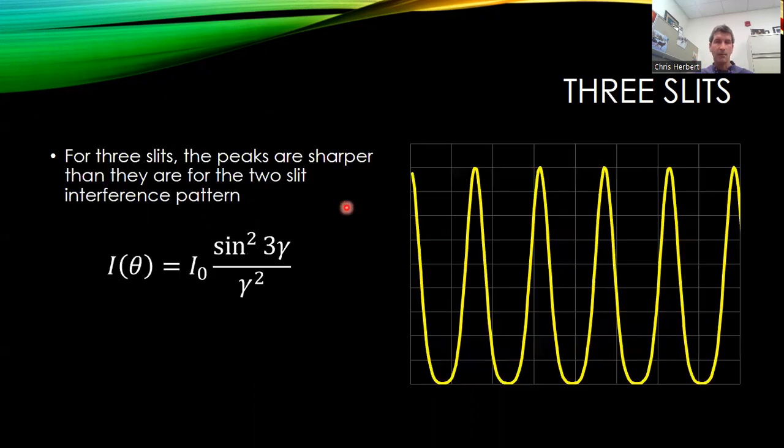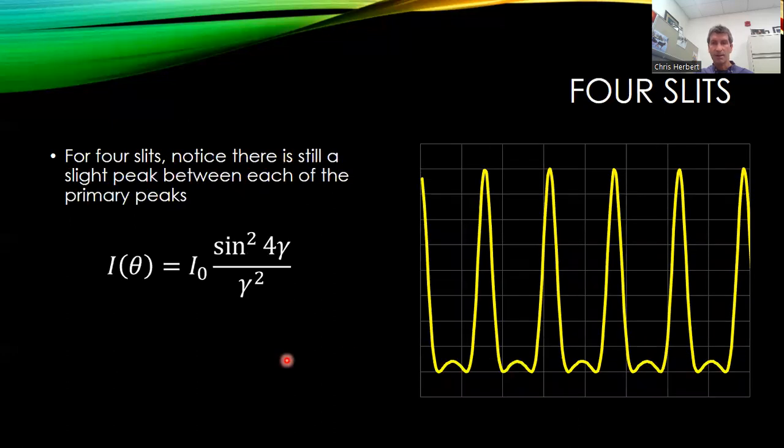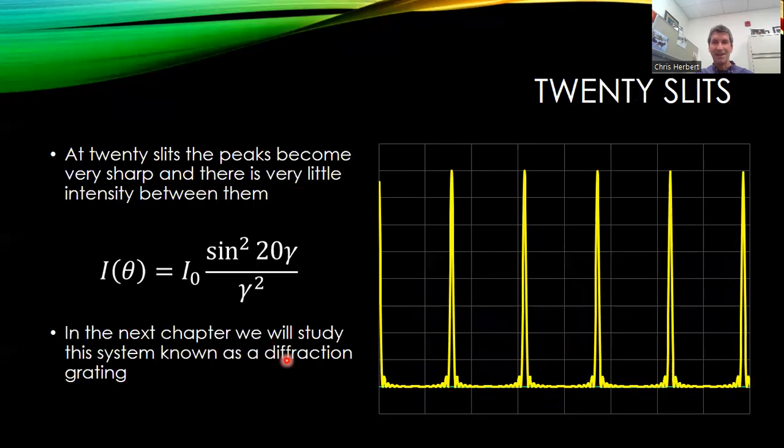So we'll ignore the mathematics here and see for three peaks, we get a little sharper intensity pattern here. For four peaks, it's even sharper. And then if we go to 20 peaks, these peaks have very little sharpness to them. And there are a lot of these interference fringes that are around it. So this is for 20 slits right here.